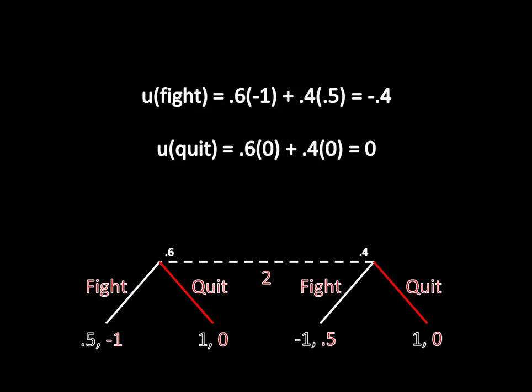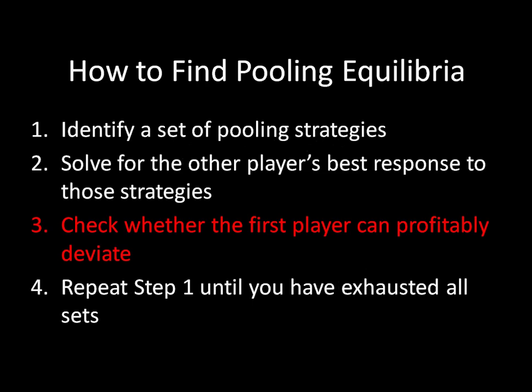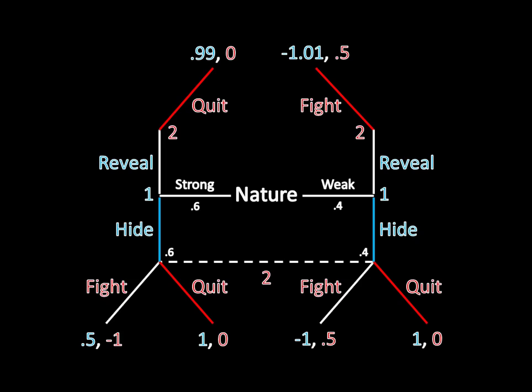We have now solved for what her best response is to the strategies from Player 1, which means we can advance to the third step of our algorithm: check whether the first player can profitably deviate. Using all the information we have in this game tree, let's look at both the strong type and the weak type and verify that neither one has a profitable deviation.